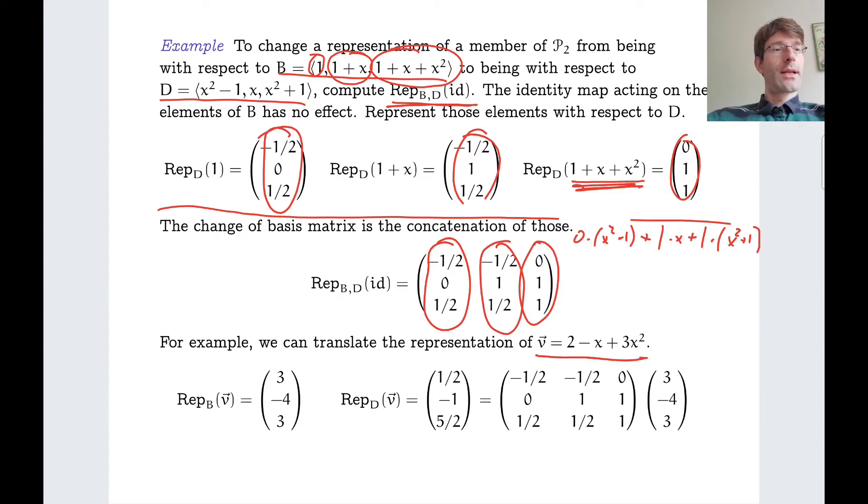And now, for example, if we have this polynomial and we represent it with respect to basis B in this way, that could be easily checked, then we can move to a representation with respect to D by multiplying with the change of basis matrix that we have just calculated.